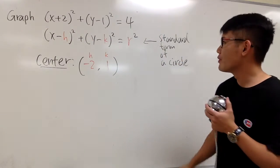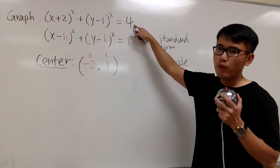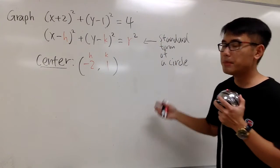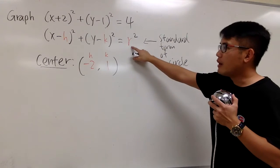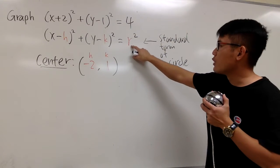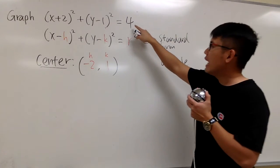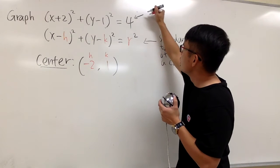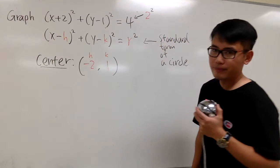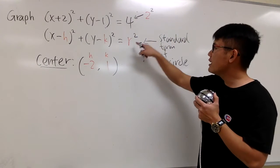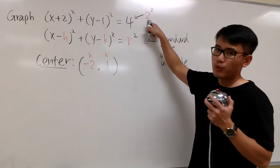How about the radius? Well, this is 4 that's written in the original equation, but then for the standard form, the r is the radius, but we have r to the second power. We have to look at the 4 as 2 to the second power. So, the radius, it's going to be this 2 in red.